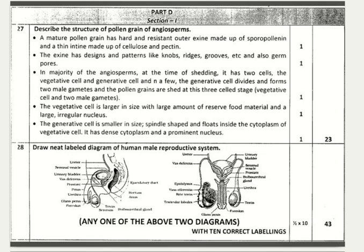The 28th question: draw a neat labelled diagram of the human male reproductive system. Any view of the male reproductive system can be drawn; ten labellings each fetching half a mark total five marks. The important labellings are: ureter, urinary bladder, vas deferens, seminal vesicle, prostate, bulbourethral gland, urethra, testis, foreskin, glans penis, testicular lobules, rete testis, vasa efferentia, and epididymis. There are no marks for the diagram itself.